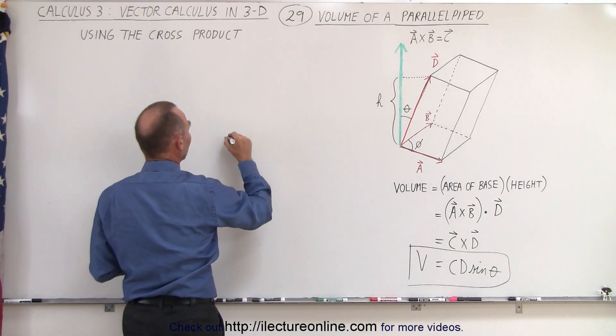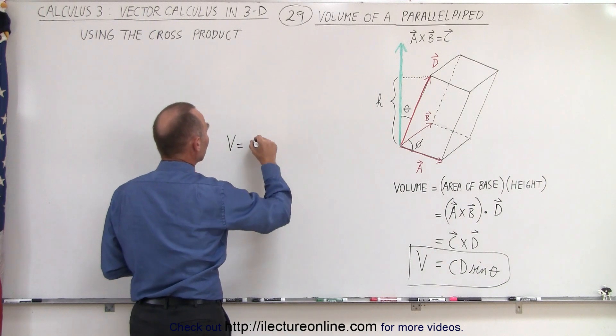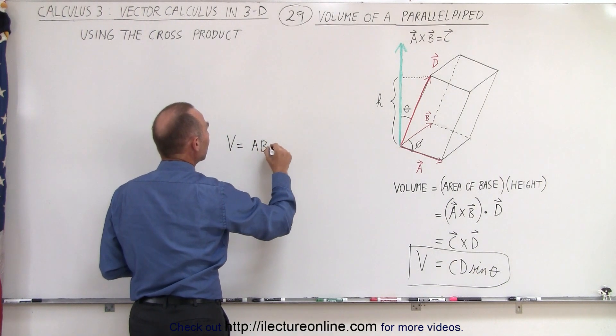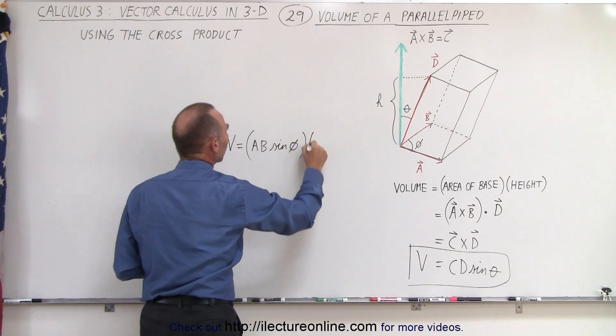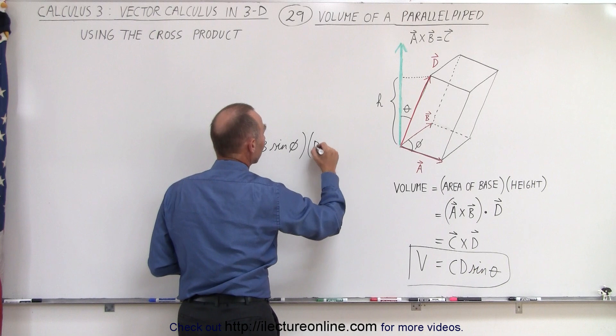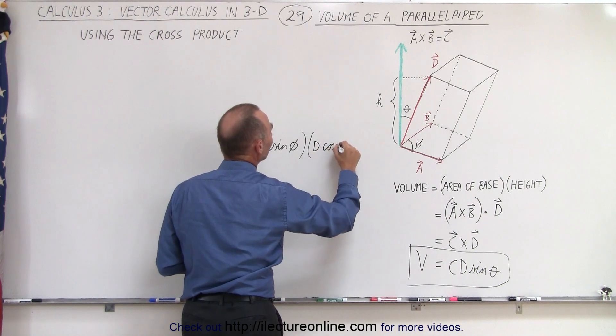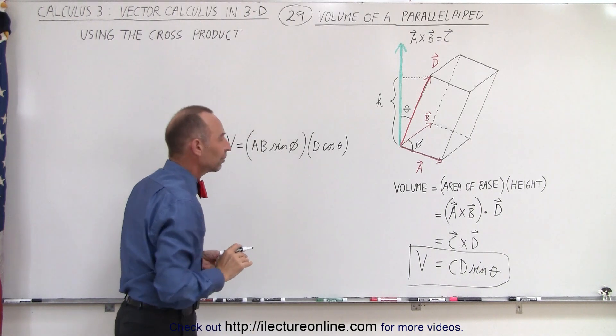So another way of looking at it is that the volume could be written as the magnitude of A cross B, which is A times B times the sine of phi, and then you're going to multiply that times D times the cosine of theta, and that gives you the magnitude of the volume as well.